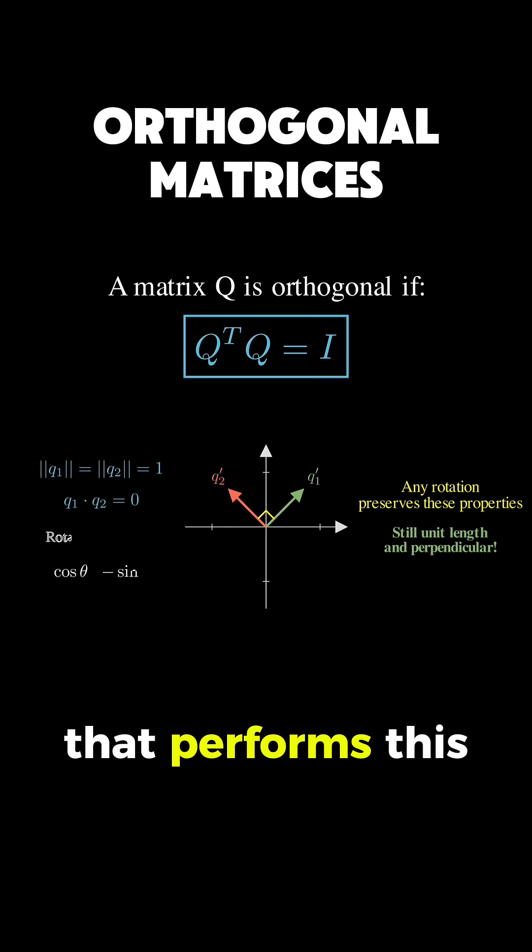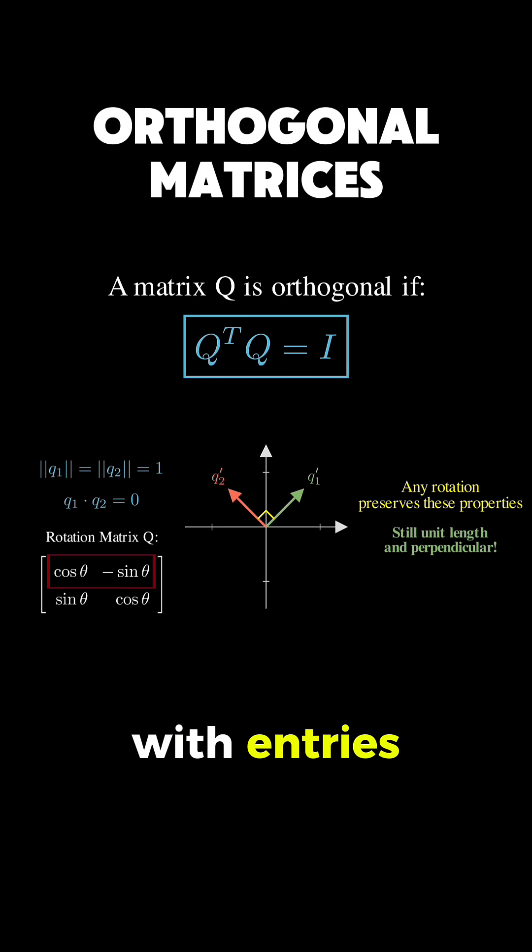And the matrix that performs this rotation with entries cosine theta and minus sine theta in the first row and sine theta and cosine theta in the second row, that's an orthogonal matrix.